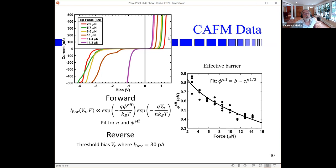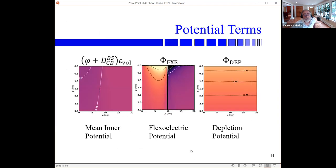Here is the experimental data. At the lowest force, the curve is red; with more force the curves shift — in the forward direction to lower voltage, and similarly in the reverse direction. You can fit this data with a thermionic model using a parameter n (a standard semiconductor ideality factor) and an effective Schottky barrier. The fitting shows the effective Schottky barrier as F to the one-third for the reverse tunneling case, where we took very small currents just above the noise ceiling. You then include the flexoelectric potential and the depletion potential — quite a lot of work; Carl almost went nuts doing this but did an excellent job.